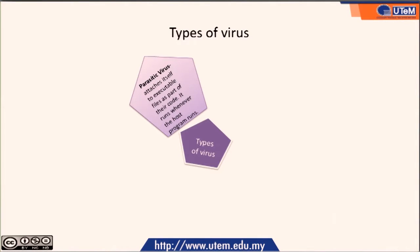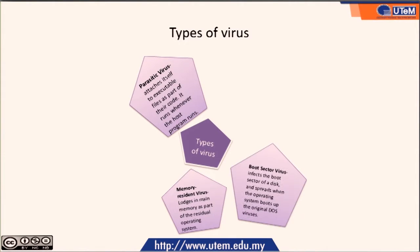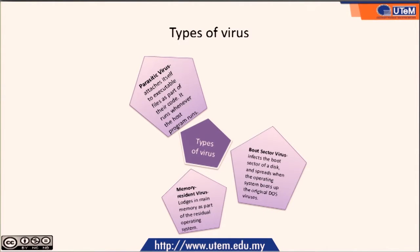The second type is the memory-resident virus, which lodges in main memory as part of the resident operating system. The third one is the boot sector virus, which infects the boot sector of a disk and spreads when the operating system boots up — one of the original DOS viruses.